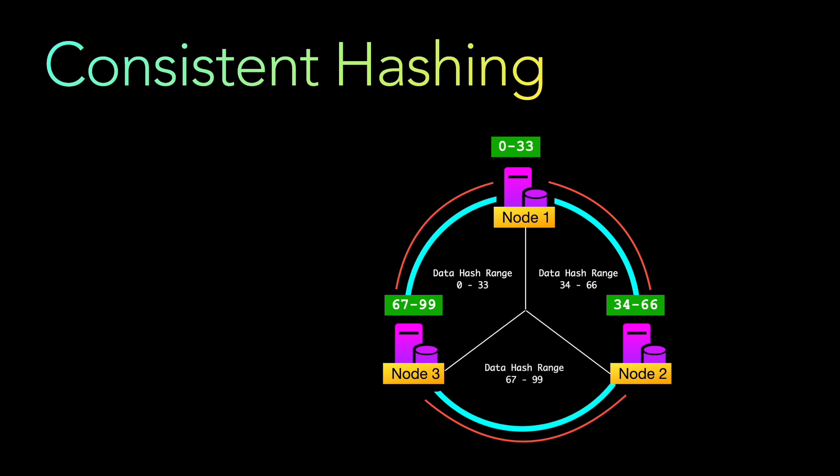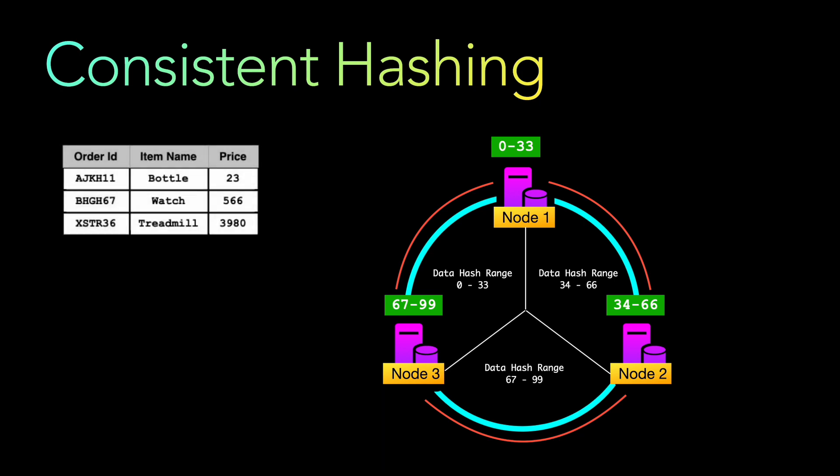Now let's say we have a table with three records and we compute the hash function of each record. The first row computes a hash value of 21. There can be multiple hash functions, but let's say the hash value for the first record is 21, the hash value for the second record is 57, and the hash value for the third record is 71. With these hash values, how will the data get persisted in the nodes?